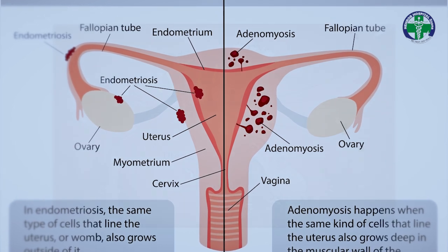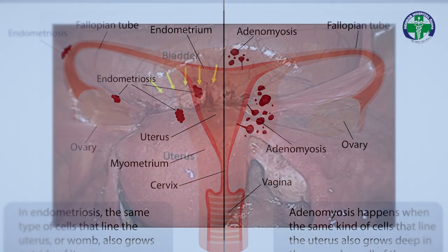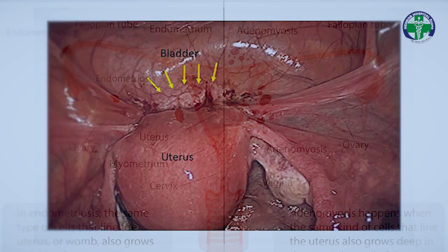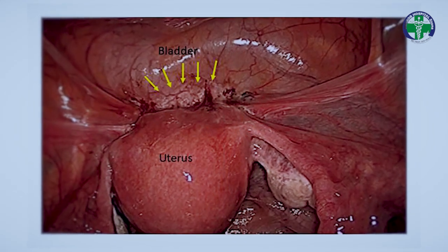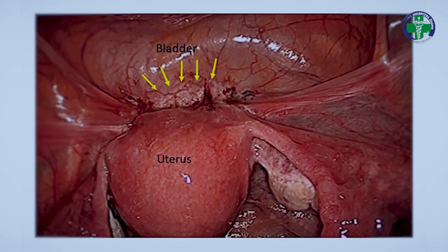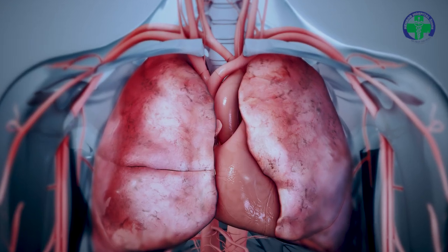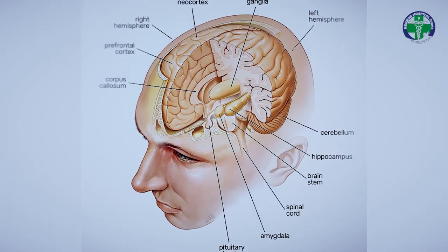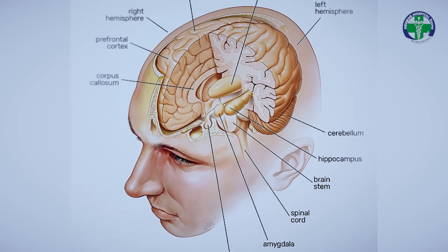The disease can get to the bladder — what we call bladder endometriosis — but it can also spread to distant places like the lungs, it can get to the umbilical cord, it can get to the brain, to the joints. So it's really a disease without a lobby.